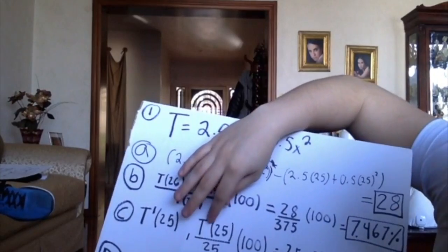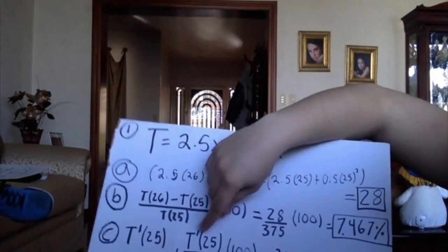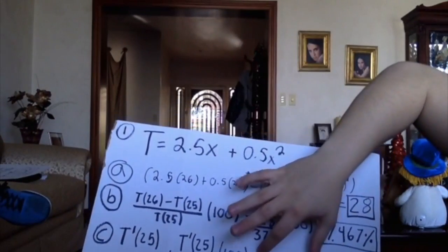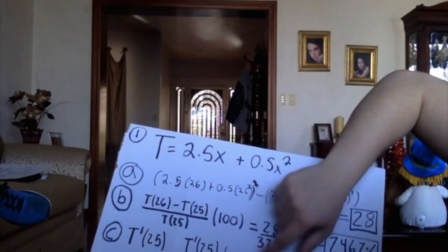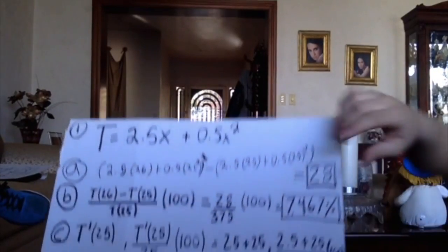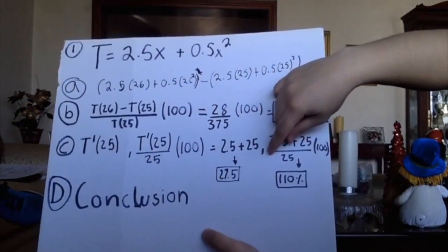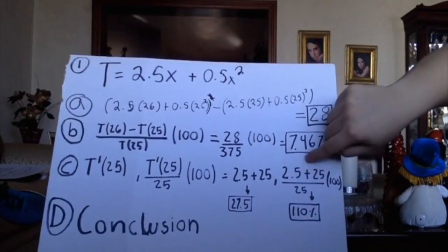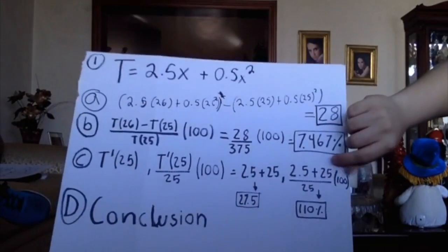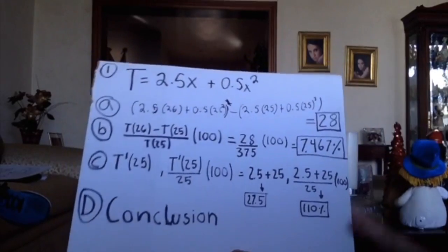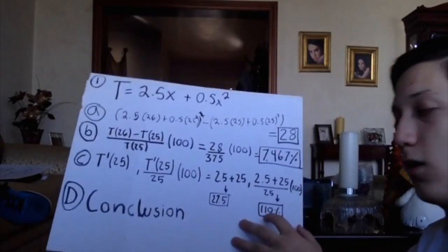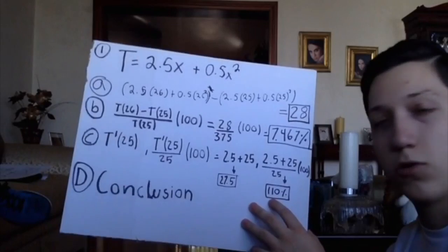Now for the next part, to get the percent change, we need to get the derivative of t, which is this, and substitute it with 25. And here you can see, we divide all that with 25, and at the end, multiply it by 100. So it will give us the percent of 110.